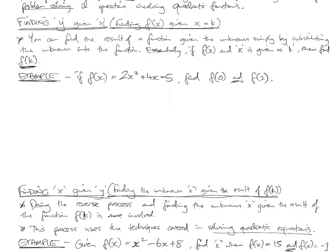So let's get into it. Finding y given x. So in function notation way, we would be saying find f of x given that x is a known number k. So you can find the result of a function given the unknown by simply substituting the unknown into the function.